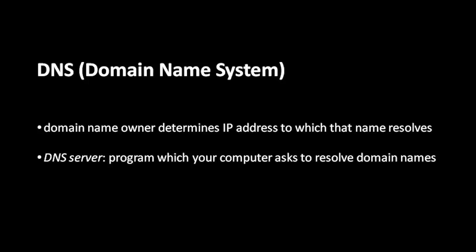When a program on your computer wants to know which IP address google.com resolves to, it needs to ask a DNS server. A DNS server is simply a program which listens for requests asking what a domain name resolves to and responds with the answer. It wouldn't work for everyone in the world to use the same DNS server, so instead computers are typically configured to use a DNS server run by their internet service provider.